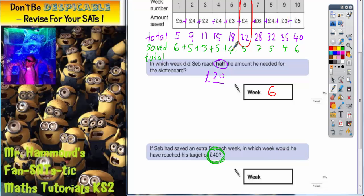So we're going to add these up again. So in week number 1 he would have only had £6. Week number 2, add on the £5 would have taken him to £11.